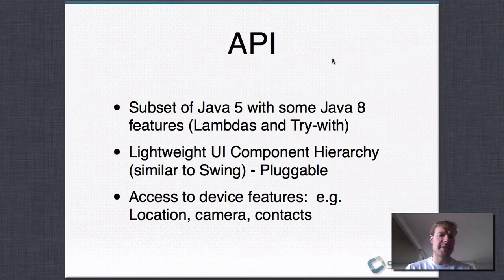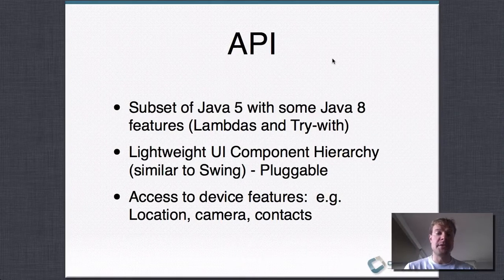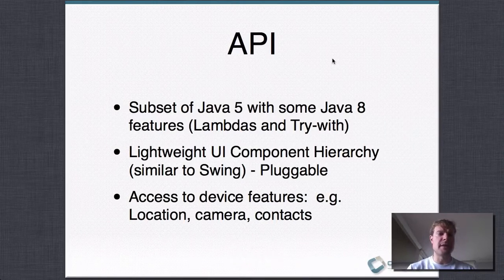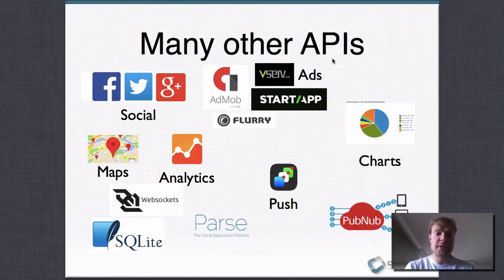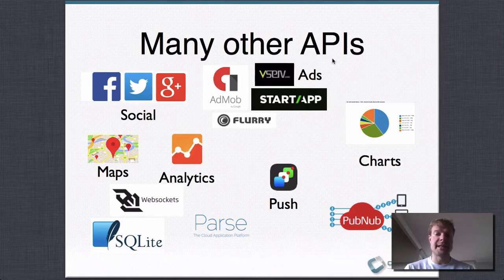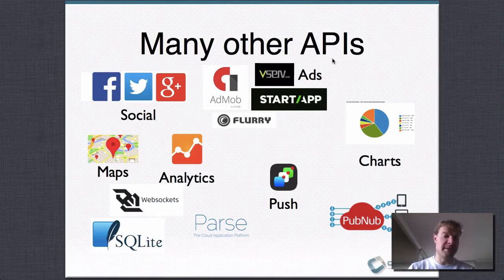In addition to core Java APIs like java.lang and java.util, there are APIs you'd expect on a mobile device: location, GPS access, camera, contacts. There's also a third-party library format, cn1lib, that adds functionality for monetization, push, and a lot of different additional APIs.